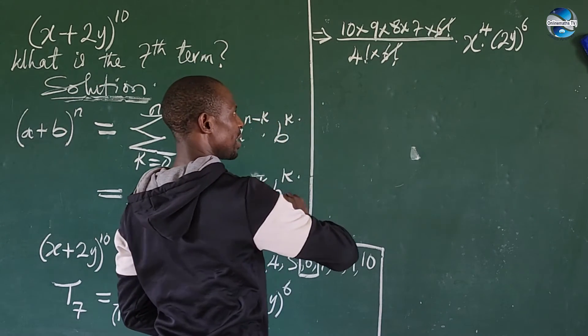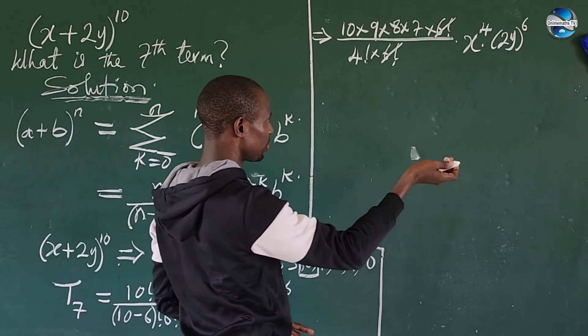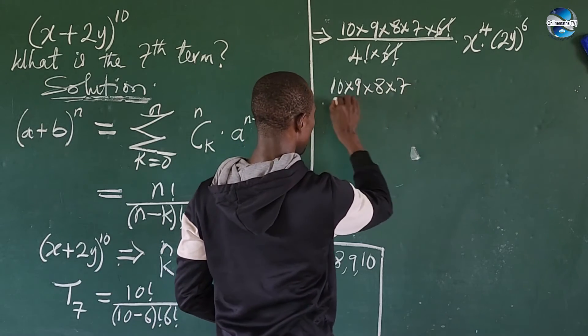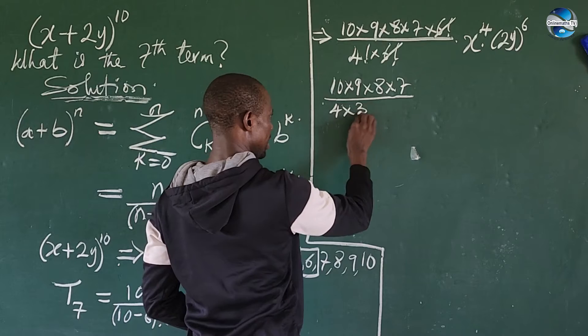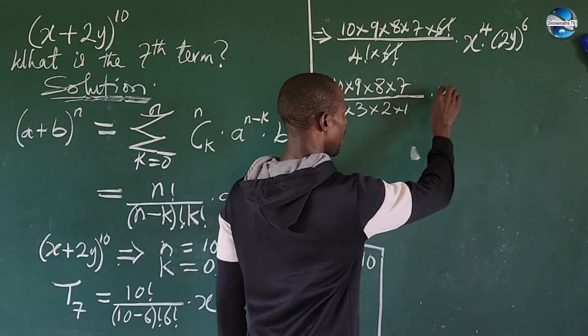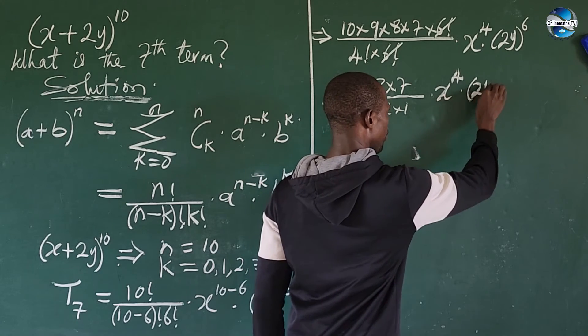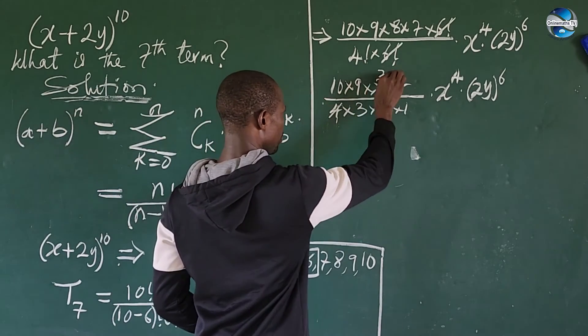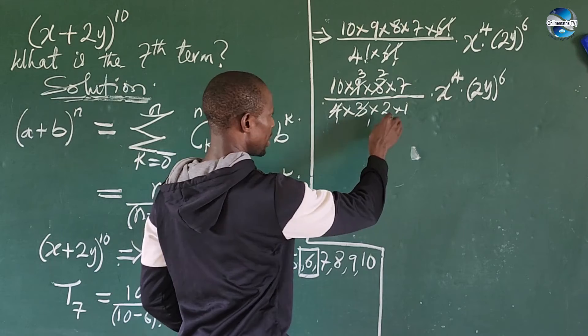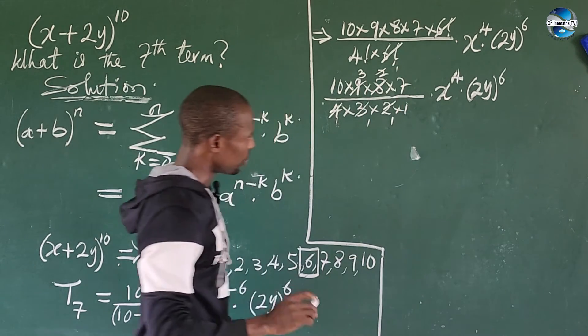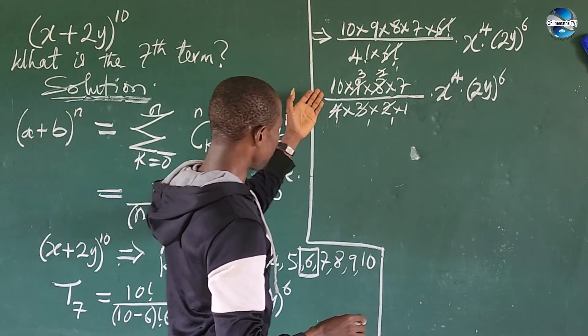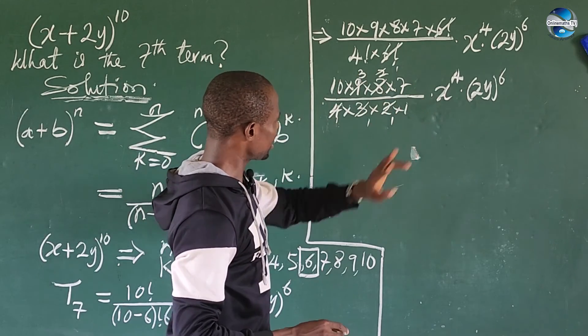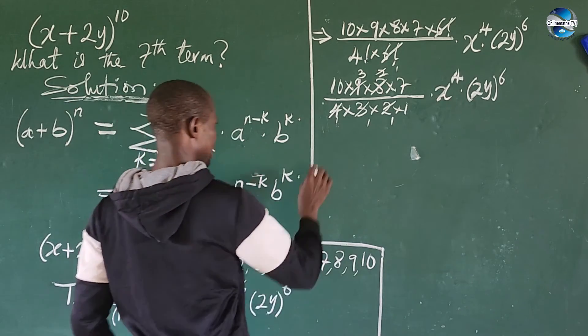We cancel this 6 factorial with this 6 factorial. We know 4 factorial is 4 times 3 times 2 times 1. So we have here to be 10 times 9 times 8 times 7 all over 4 times 3 times 2, times x^4 times (2y)^6. So we can cancel out here: 4 here gives 1, 4 here gives 2, 3 here gives 1, 3 here gives 3, 2 here gives 1, 2 here gives 1. So let's go ahead and open up everything.